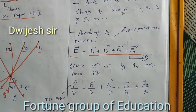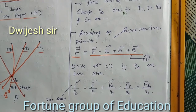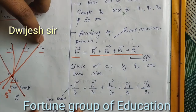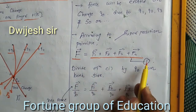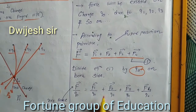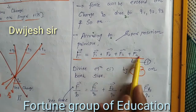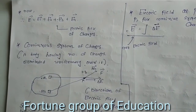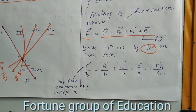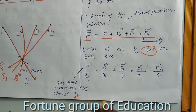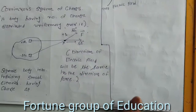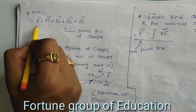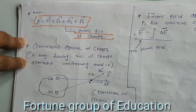From the definition of electric field, the electric field is the force exerted on a test charge divided by that test charge. Dividing equation F = F1 + F2 + F3 + F4 by q0 on both sides gives F/q0 = (F1 + F2 + F3 + F4)/q0. This net force per unit test charge is the electric field E, so E = E1 + E2 + E3 + E4, the electric field experienced by the test charge q0 due to all the charges.